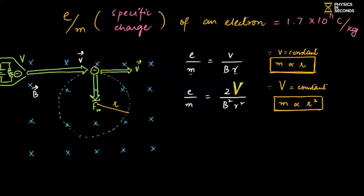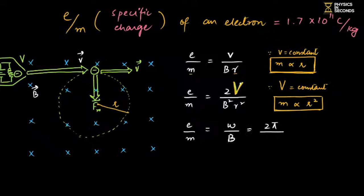If we substitute v with ω/B in the first (velocity) formula, we get another form of the Charge to Mass Ratio relation in terms of angular frequency. Replacing ω with 2π/T gives the relation in terms of Time Period. So different relations keep emerging.